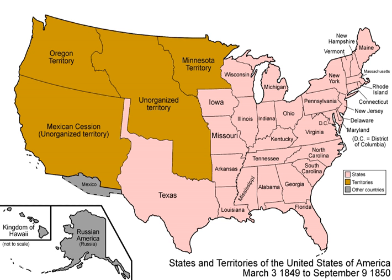Others argue that the Compromise only made more obvious the pre-existing sectional divisions and laid the groundwork for future conflict. They view the Fugitive Slave Law as helping to polarize the U.S., as shown in the enormous reaction to Harriet Beecher Stowe's novel Uncle Tom's Cabin. The passage of the Fugitive Slave Law aroused feelings of bitterness in the North. Furthermore, the Compromise of 1850 led to a breakdown in the spirit of compromise in the United States in the antebellum period, directly before the Civil War. The deaths of influential Senators who worked on the Compromise, primarily Henry Clay and Daniel Webster, contributed to the feeling of increasing disparity between the North and South.